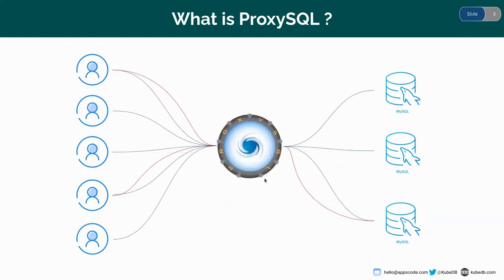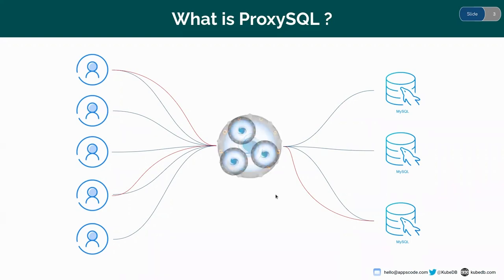ProxySQL actually sits between the user and the MySQL server and forwards query traffic to MySQL according to the query rules you have set. Basically, ProxySQL is an open source, high performance, high availability database protocol-aware proxy for MySQL and its forks. It has an advanced connection management system — it creates connection pooling with the MySQL servers. When traffic is sent to the ProxySQL server, it reads the traffic, matches it with the query rules, and forwards it to specific pods or nodes of the MySQL server. Also, if you're concerned about heavy traffic, ProxySQL provides clustering where ProxySQL nodes distribute the load among themselves, enhancing performance significantly.